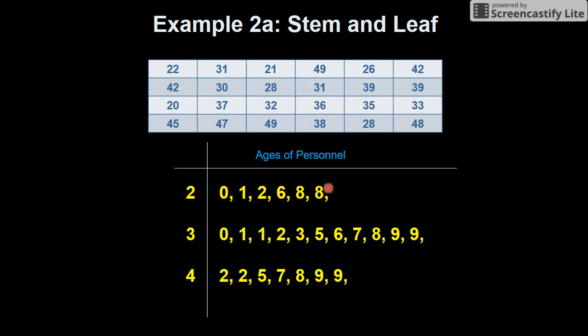So 0, 1, 2, 6, 8, 8, 3. So that would be 30, 31, another 31, a 32, a 33, a 35, a 36, a 37, a 38, and then two 39s. Do you see? So that's all the ages.